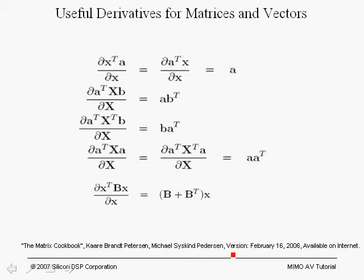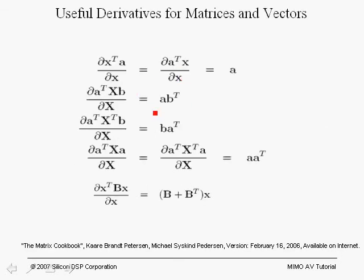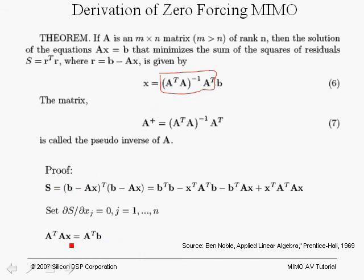To derive this expression we use matrix and vector identities — for example, the derivative of X-transpose A with respect to X equals A, and the derivative of X-transpose BX with respect to X gives the corresponding expression. These identities and many more are available in the Matrix Cookbook. Multiplying both sides by the inverse of A-transpose A, we get X equals the pseudo-inverse of A times B — the key theorem used to derive the zero-forcing MIMO equalizer.